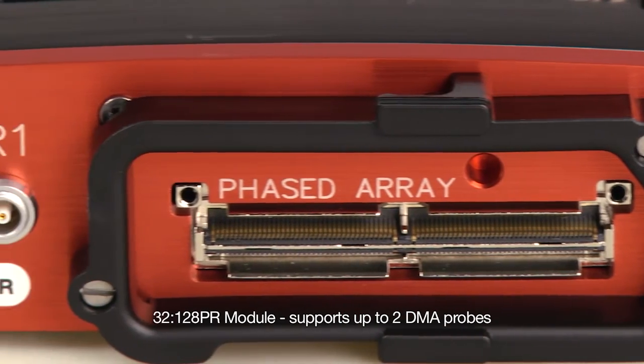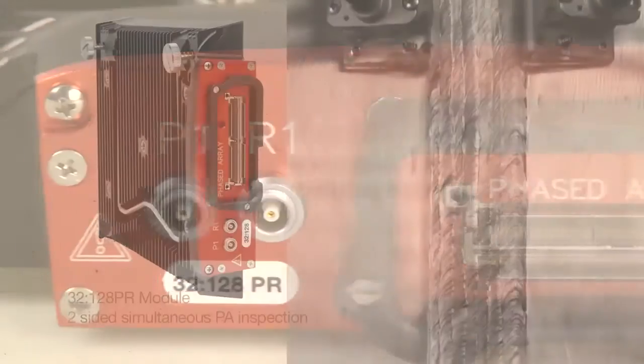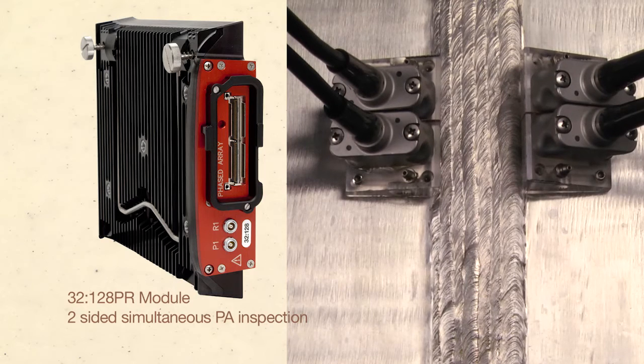The 32-128 PR module supports up to two DMA probes for two-sided simultaneous phased array inspection.